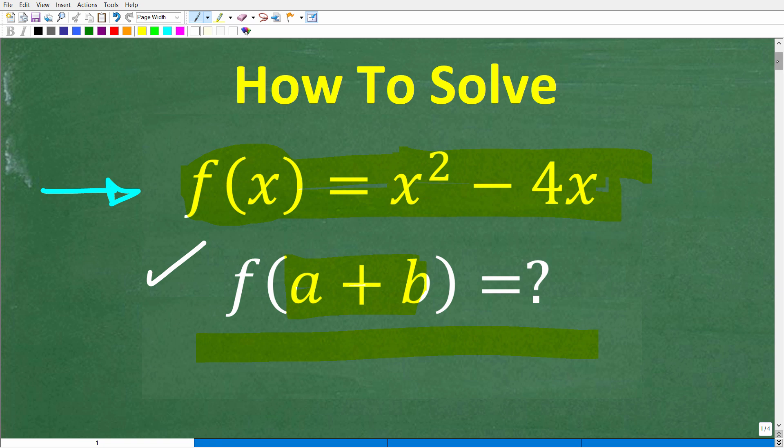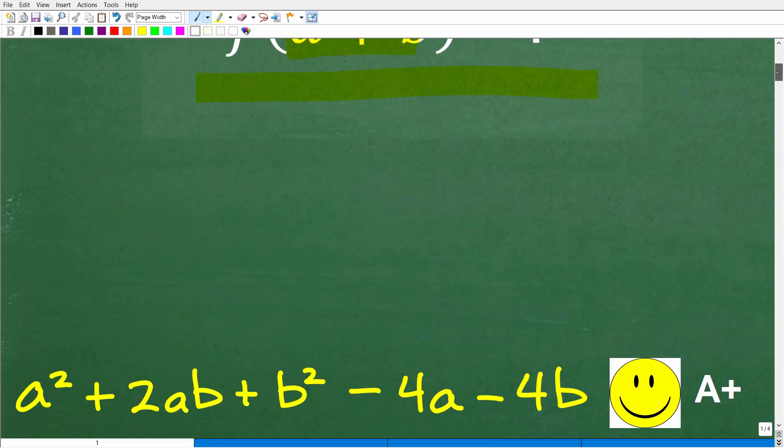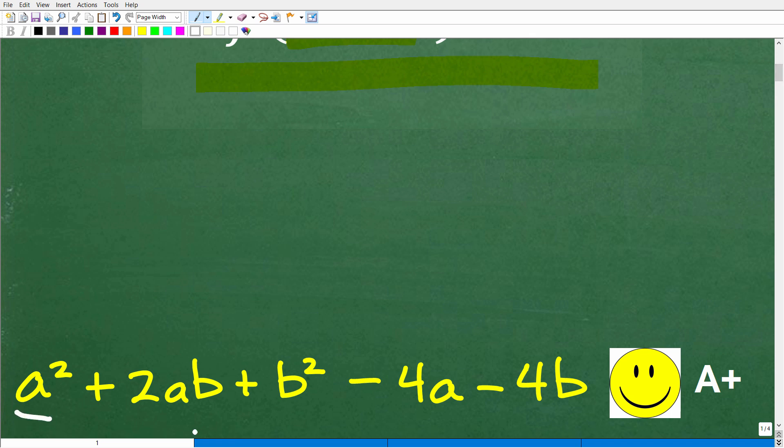Okay, so let's go ahead and take a look at the answer. The correct answer is the following: a² + 2ab + b² - 4a - 4b. So we have a pretty long polynomial expression here. Now, if you don't have the terms in this exact order, but you have all these terms, well, that indicates to me that you did this right, and you're going to get a happy face and an A+.